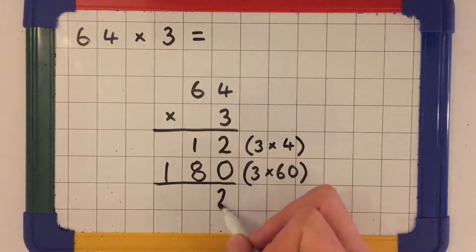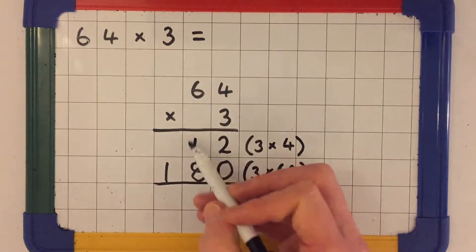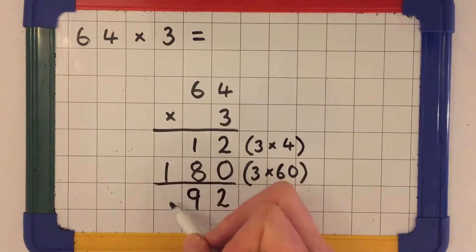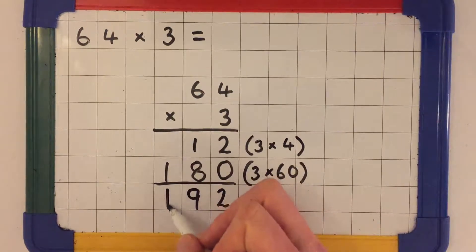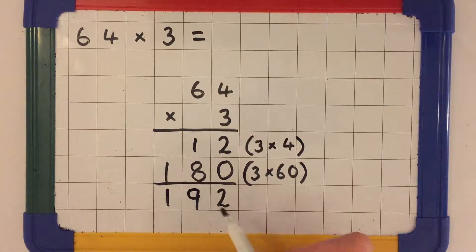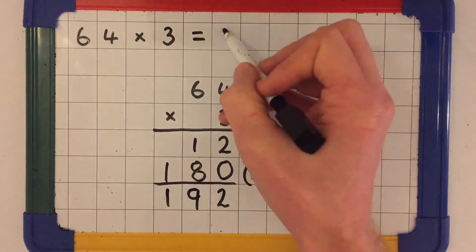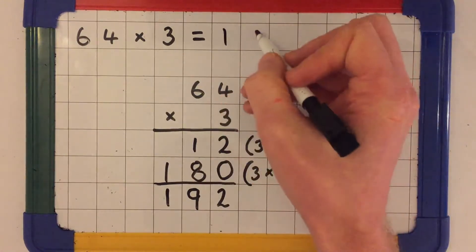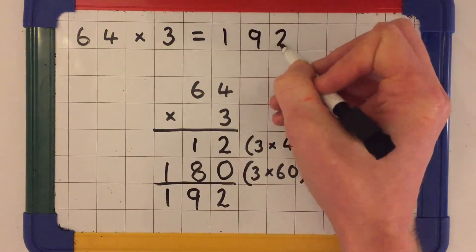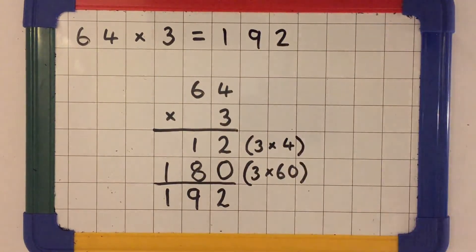So 2 add 0 is 2. 1 add 8 is 9. And 1 add 0 is 1. So we have 1 hundred, 9 tens, and 2 ones. Our answer is 192. So 64 multiplied by 3 is 192.